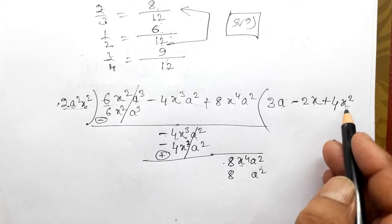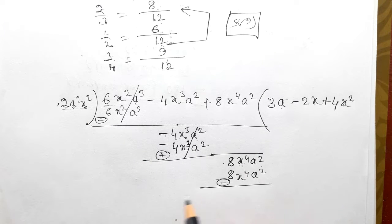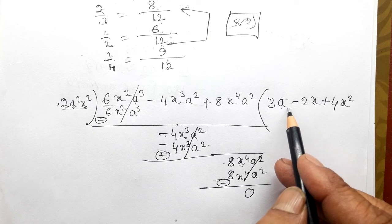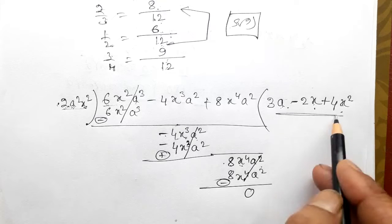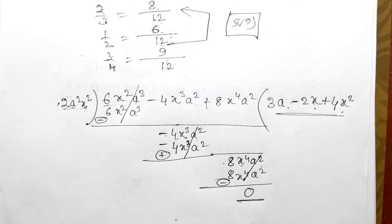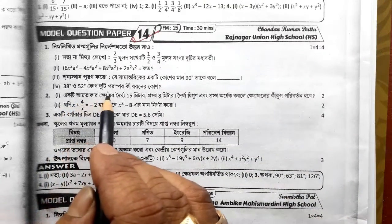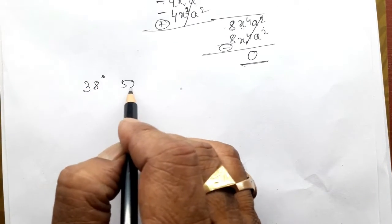We have 3a plus 4x squared. And listen to the question. Let's see: we say 38 degrees or 29 degrees, which is the same place? 38 degrees or 29 degrees, then 38 degrees, and then r is 29 degrees.